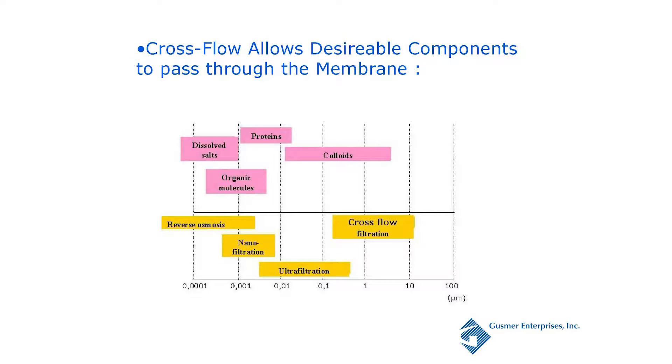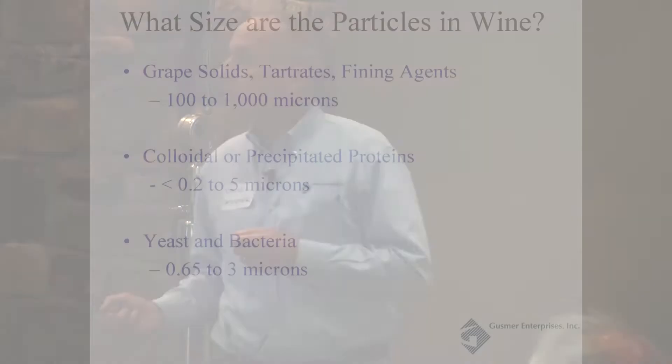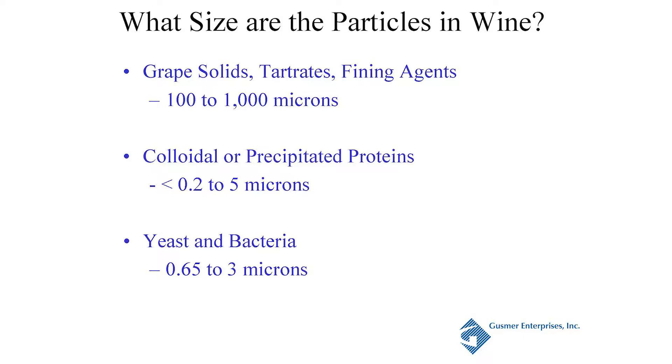Rob had a good slide talking about the soup — so what are these particles in wine that we're trying to remove? Grape solids, tartrates, fining agents — we are trying to remove those; they're going to be around 100 to 1,000 microns in size. Your colloids or proteins are going to be a bit smaller, around 0.2 to 5 microns. Yeast and bacteria are 0.65 to 3 microns.